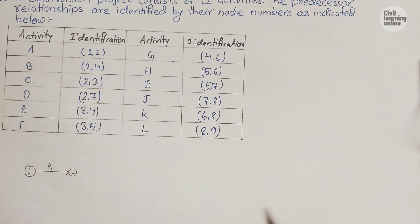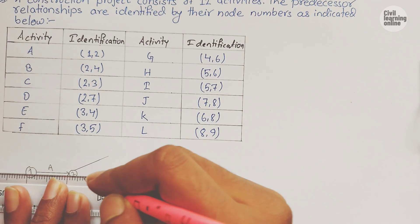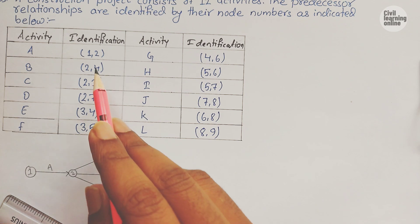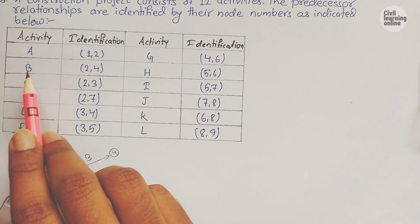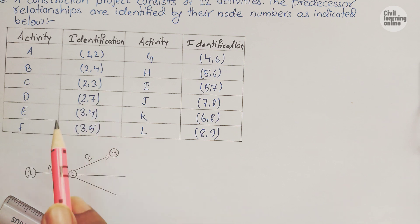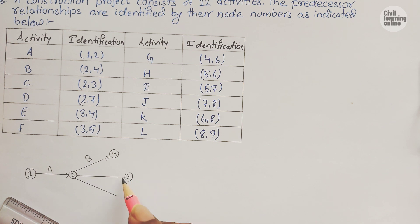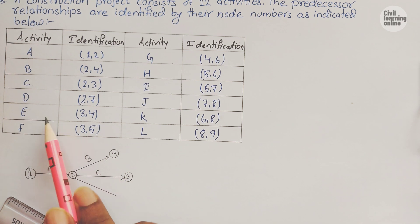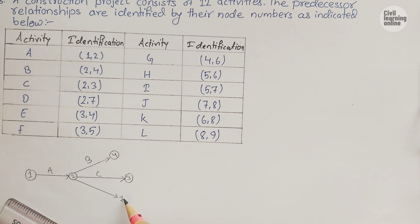From node 2, three activities start: B, C, and D. We draw three lines for three separate activities. Activity B goes from node 2 to node 4. Activity C goes from node 2 to node 3. Activity D starts from event 2 and ends at node 7.